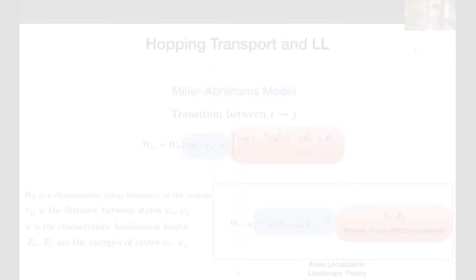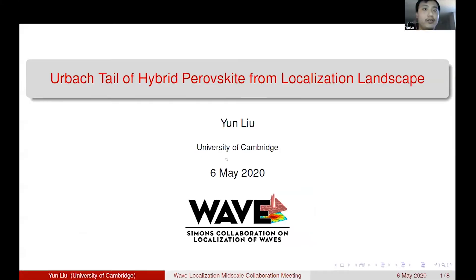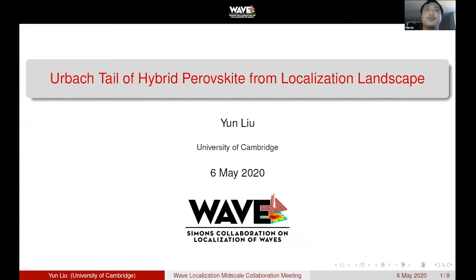Our next talk is by Yun Liu. He's a postdoc at Cambridge working with Richard Friend, and he's going to talk about the Urbach tail of hybrid perovskites from localization landscape. Today I'm going to talk about utilizing the localization landscape theory to understand the Urbach tail in the hybrid perovskite material system.